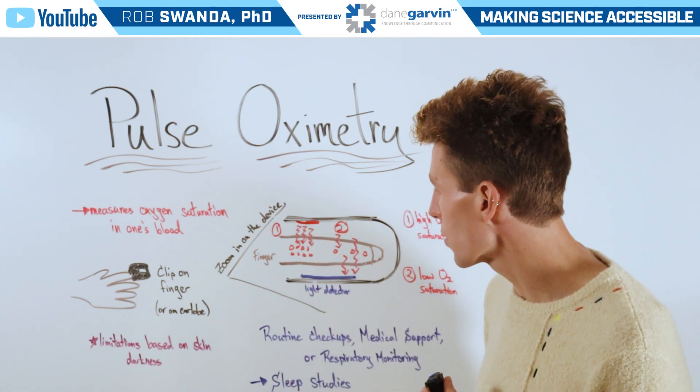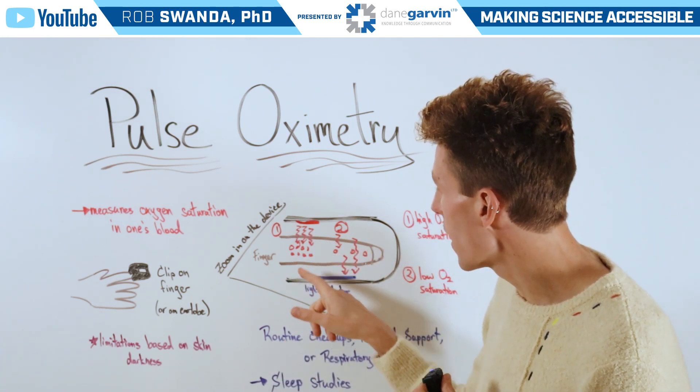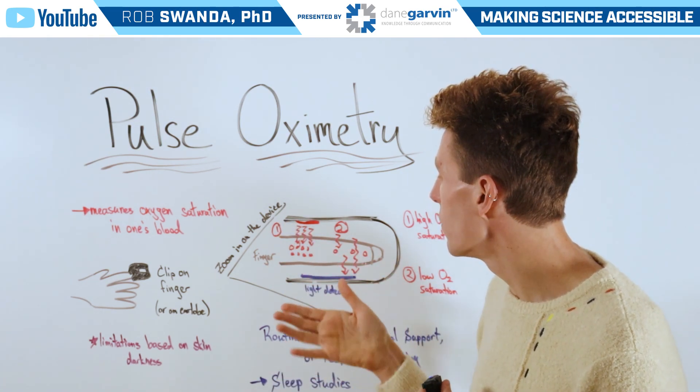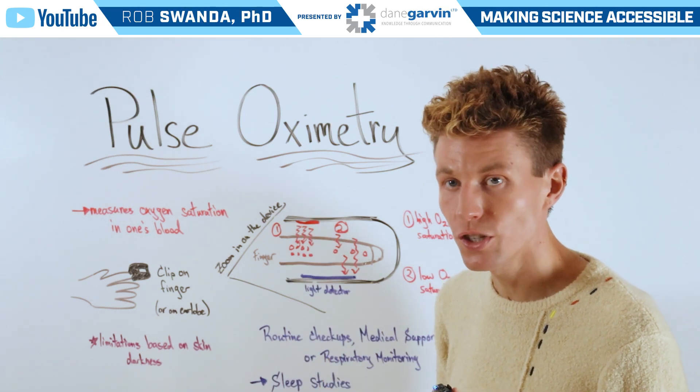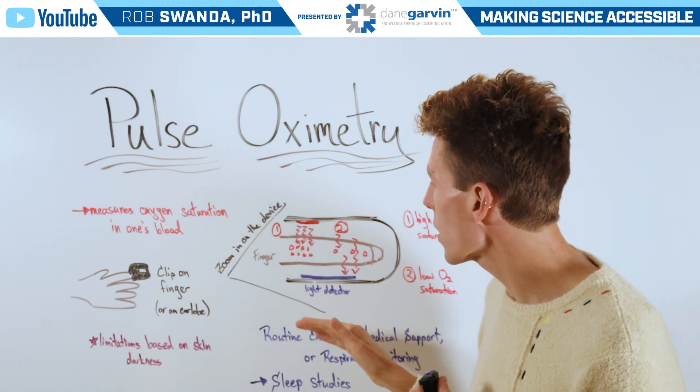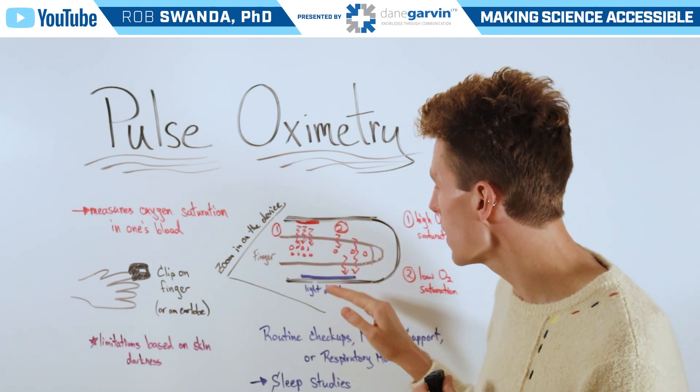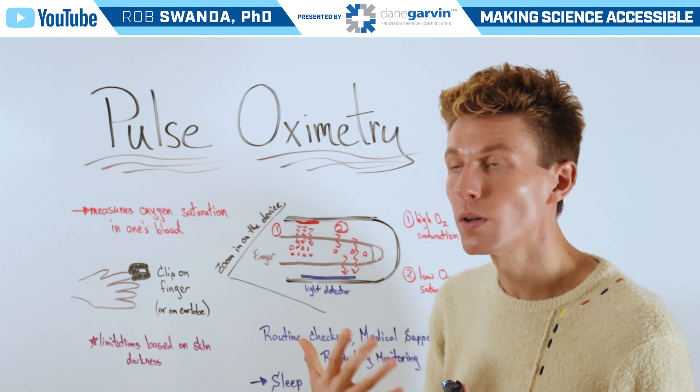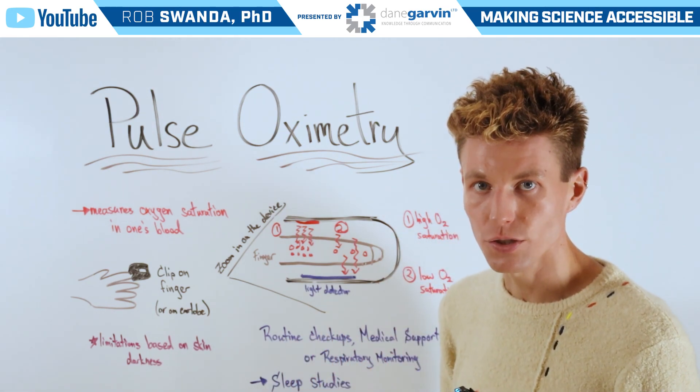So when the finger is inside, in scenario one, if there's a lot of blood cells that are highly oxygenated, that infrared light is not going to be able to pass from the emitter to the detector, leading to an individual having high oxygen saturation.